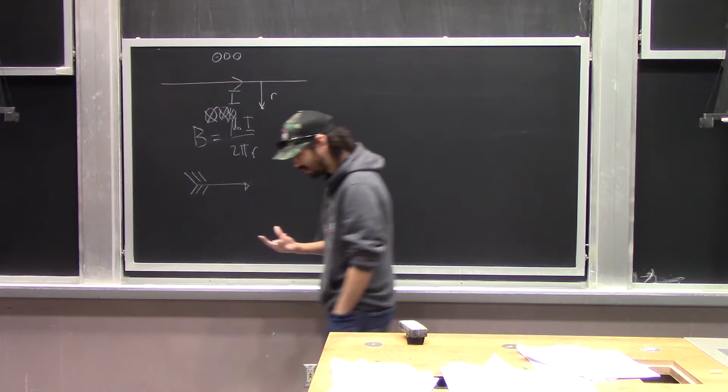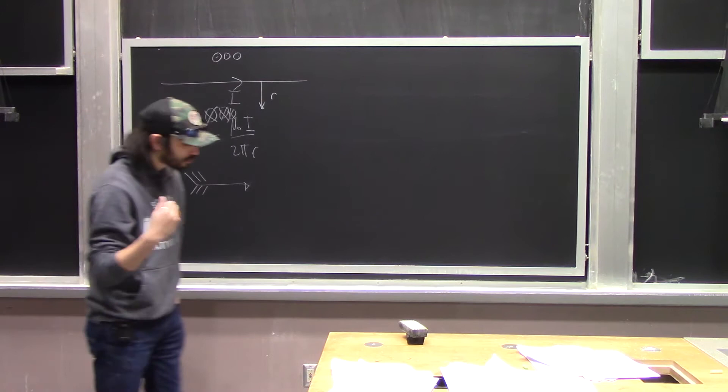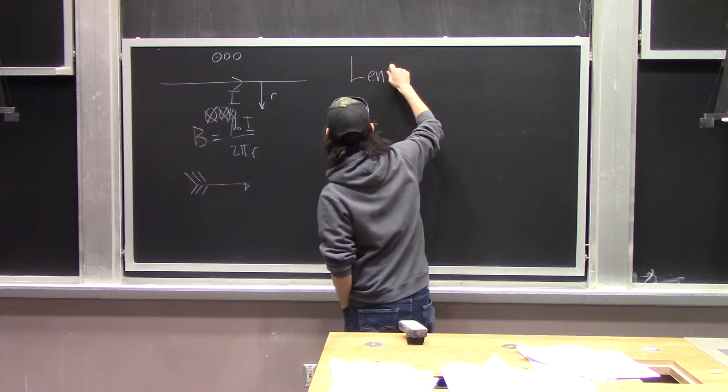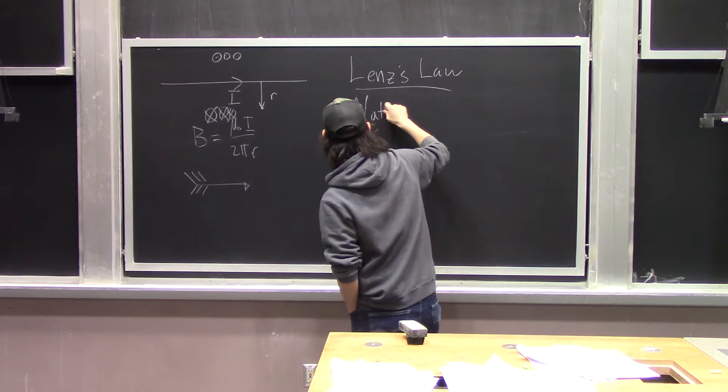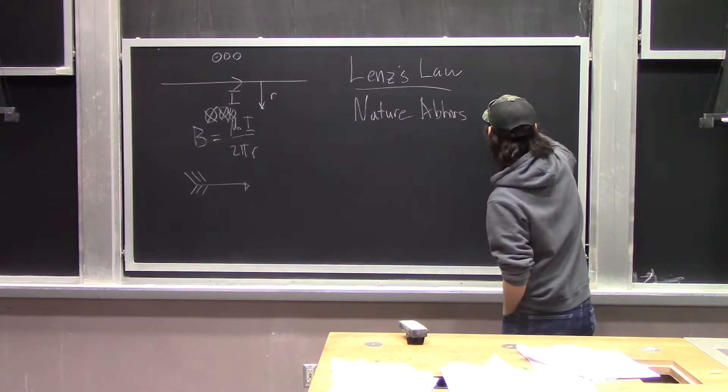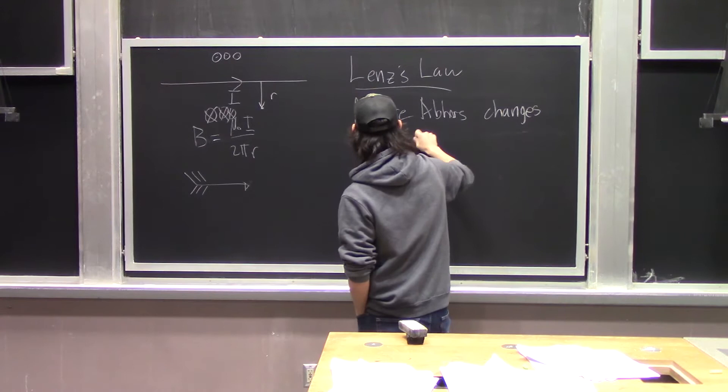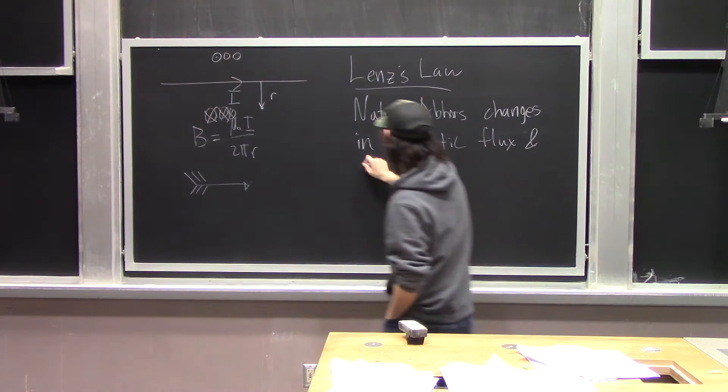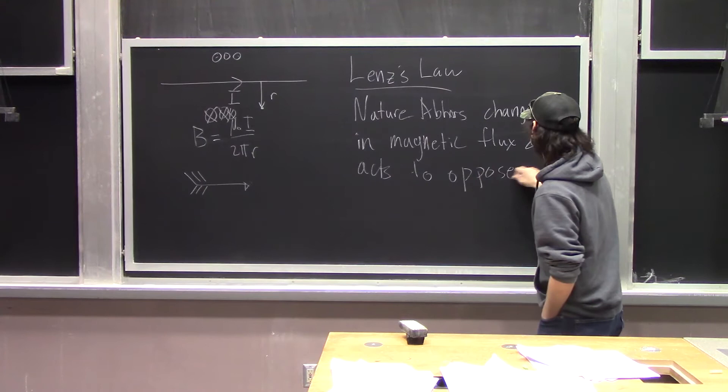Now to build on this, we want to talk about how changing magnetic fields can induce currents. This is called Lenz's Law, or Faraday's Law. The statement of Lenz's Law is that nature abhors changes in magnetic flux and acts to oppose that change.